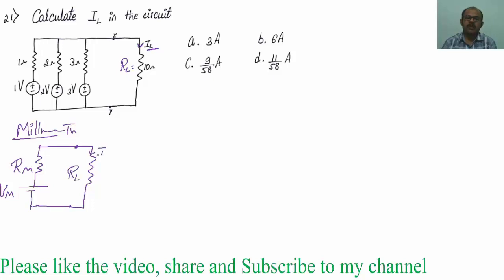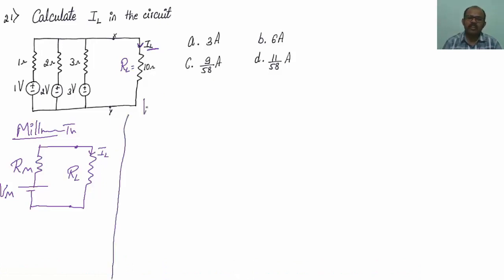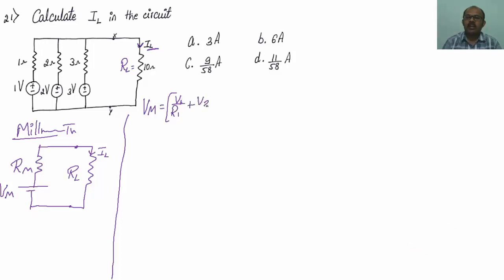We apply KVL to determine the value of IL. The Millman's voltage Vm is given by the formula: Vm = (V1/R1 + V2/R2 + V3/R3) / (1/R1 + 1/R2 + 1/R3).